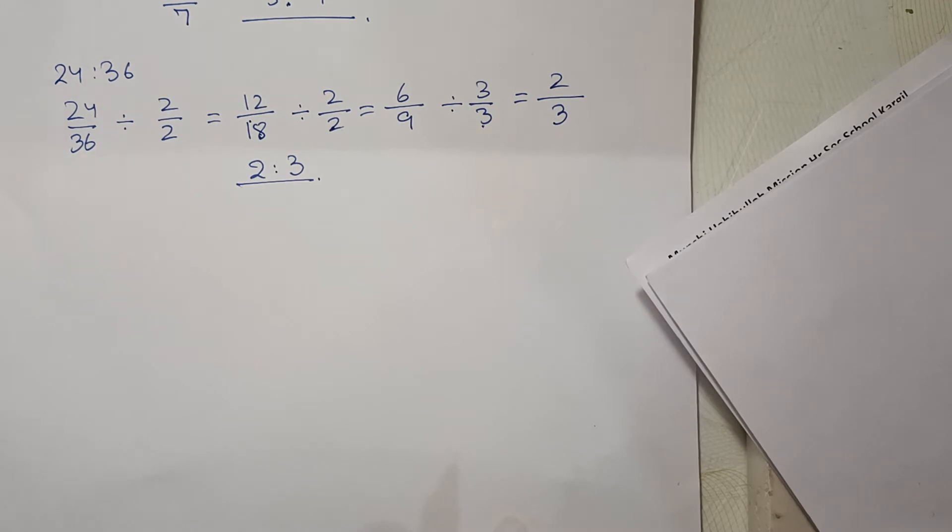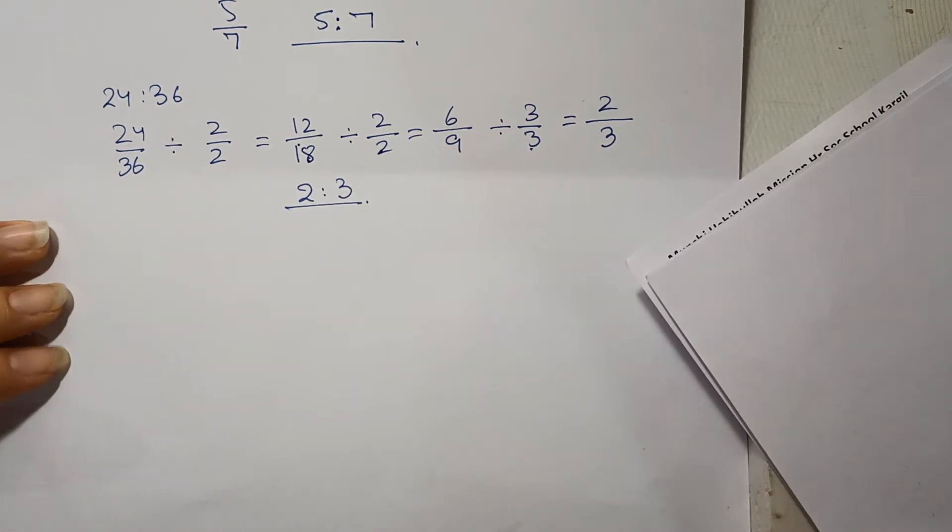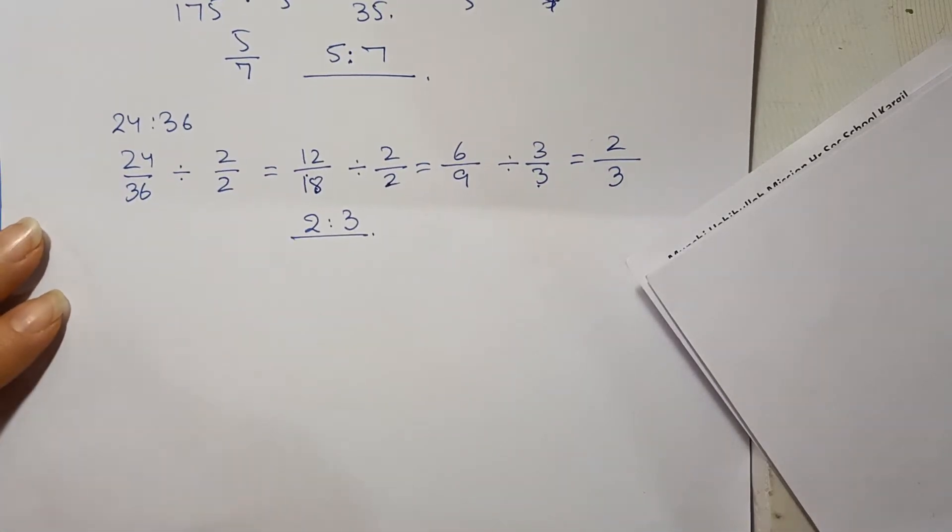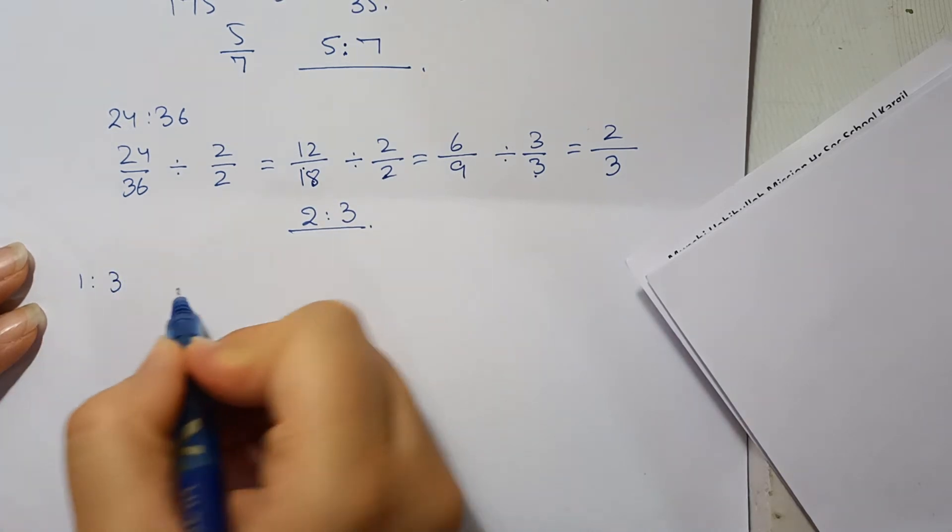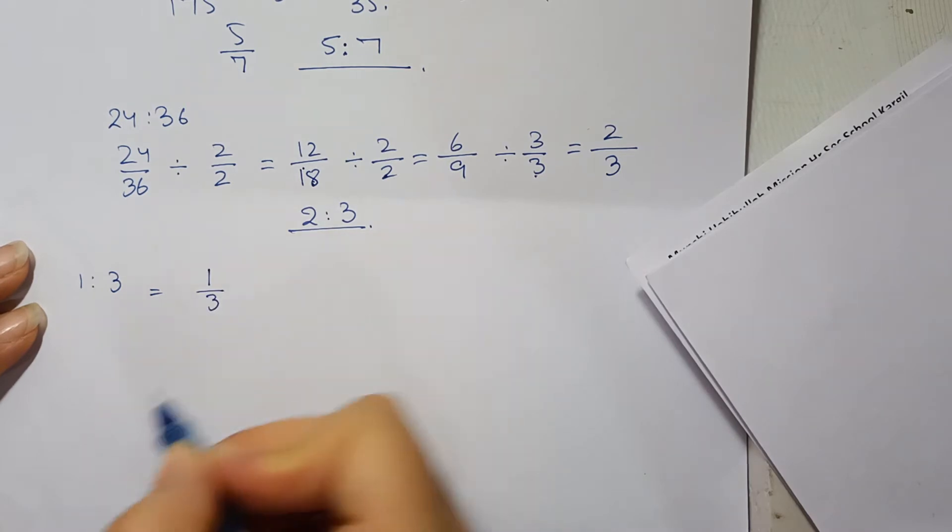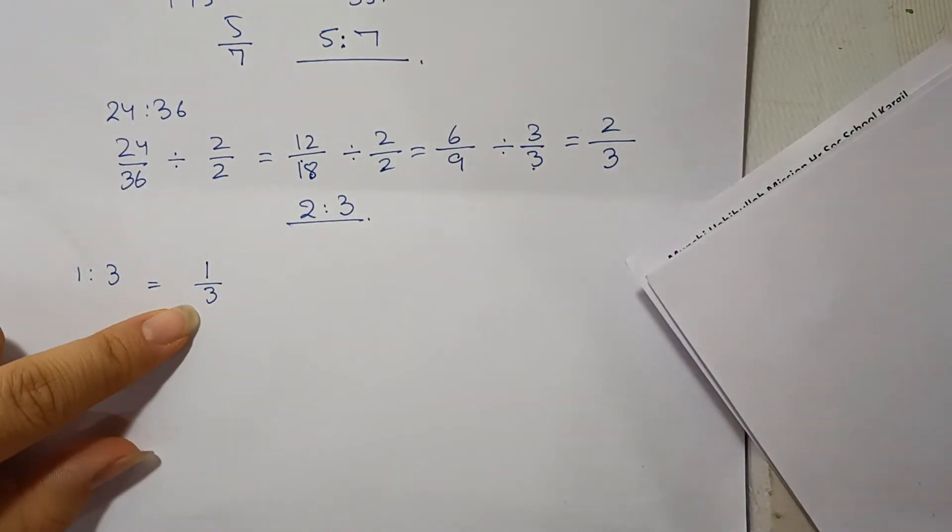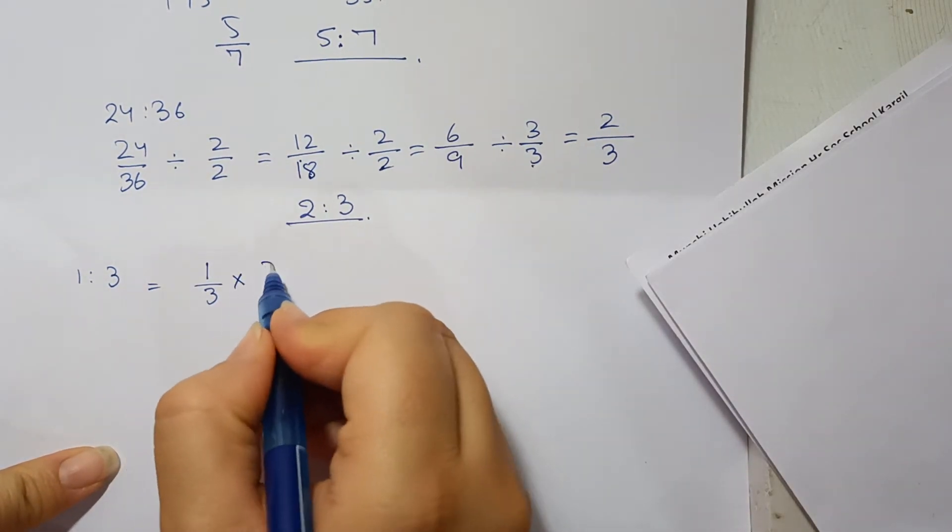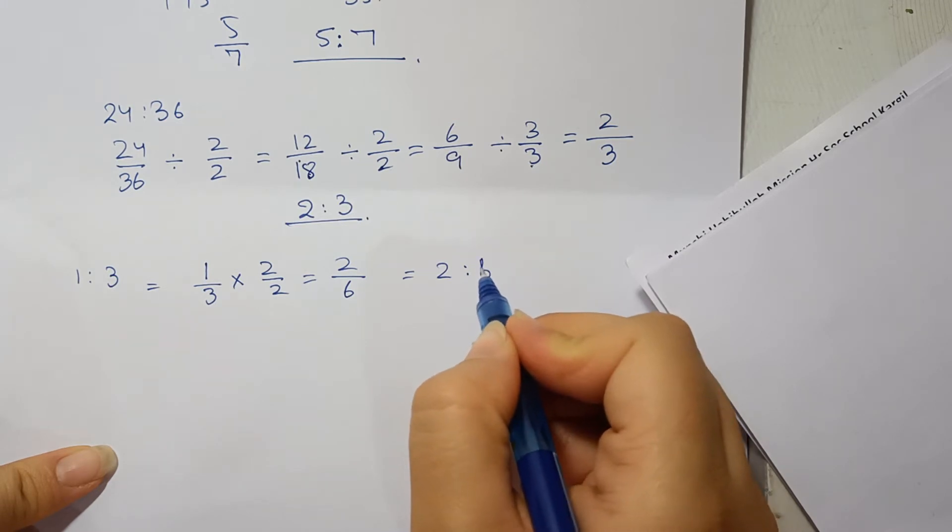This is how we convert ratio to simplest form. In part B, we have to write 3 equivalent ratios for the following ratio. Equivalent means we have to multiply with the same number so that our number will get the equivalent number. Suppose we have 1 by 3. We will multiply 2 upon 2: 2 ones are 2, 2 threes are 6, so 2 is to 6.